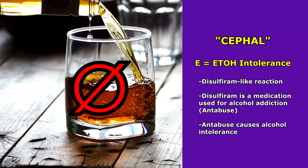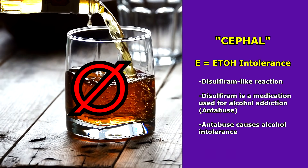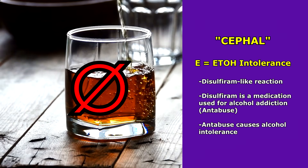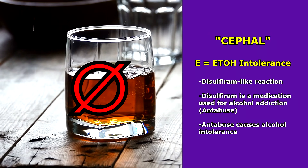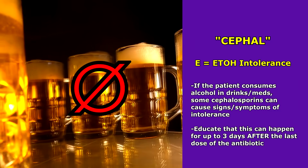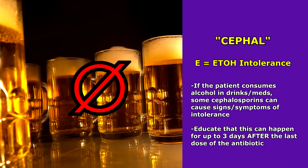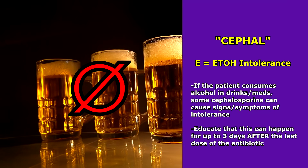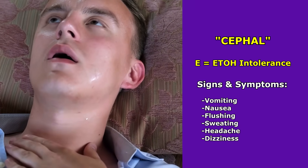E is for alcohol intolerance — ETOH is a medical abbreviation for ethanol alcohol. This can also be called a disulfiram-like reaction, named after disulfiram (trade name Antabuse), a medication prescribed to treat alcohol addiction that causes intolerance to alcohol. Unfortunately, if a patient drinks alcohol or takes medications containing it while on some types of cephalosporins, they can experience similar intolerance symptoms — and this can happen up to three days after their last dose. Signs and symptoms include vomiting, nausea, flushing, sweating, headache, and dizziness.